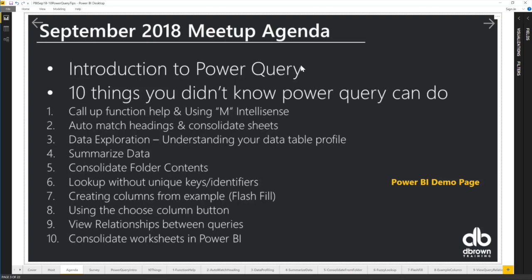The topics we'll cover include: calling up function help, auto-matching headings and consolidating sheets, data exploration, summarizing data, consolidating from a folder, doing a lookup without a unique reference, creating columns from examples like Flash Fill, using the Choose Columns button, viewing relationships between queries, and consolidating worksheets in Power BI versus Excel.